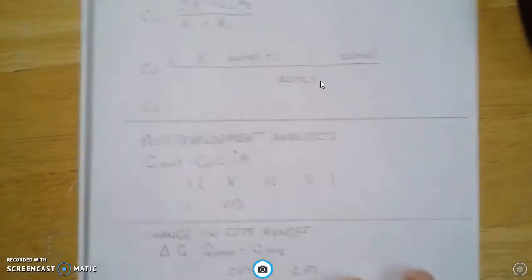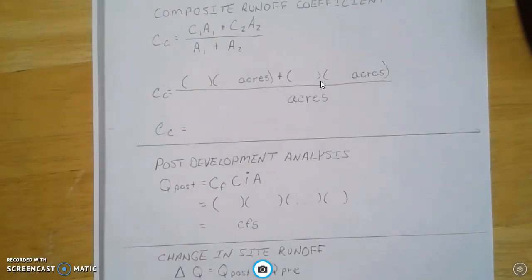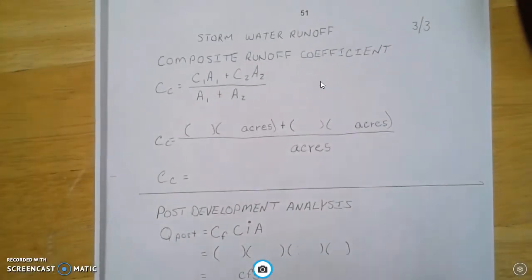Next page. So here we go. Runoff coefficient. We're going to take the C1 times the A1 plus the C2 times the A2. We're going to divide that by the area 1 plus area 2 to get the calculations done here. So here it is.